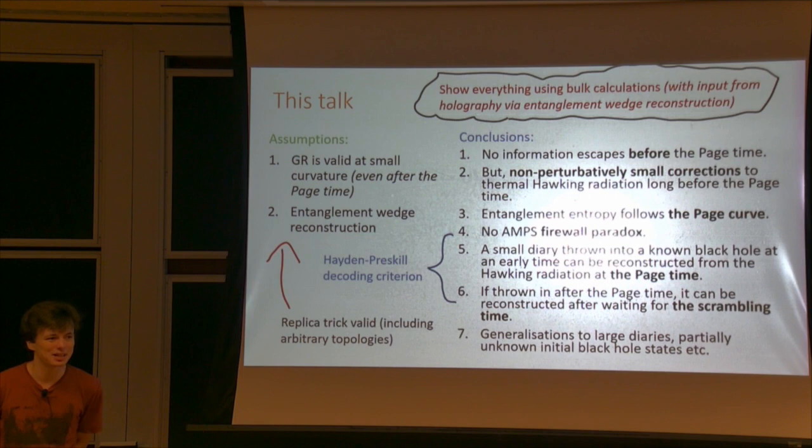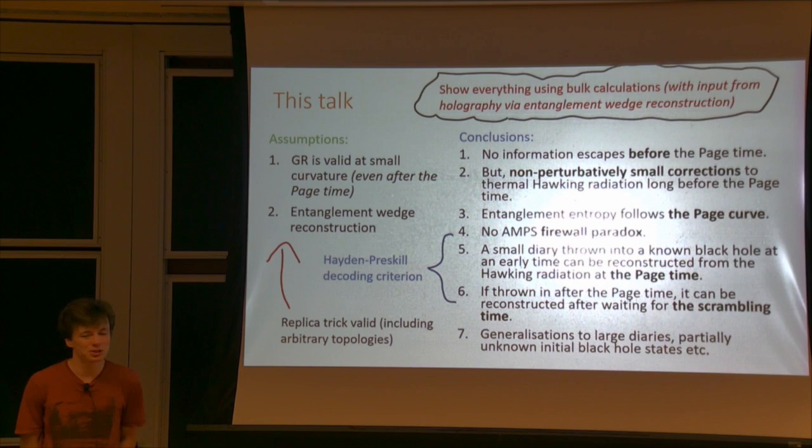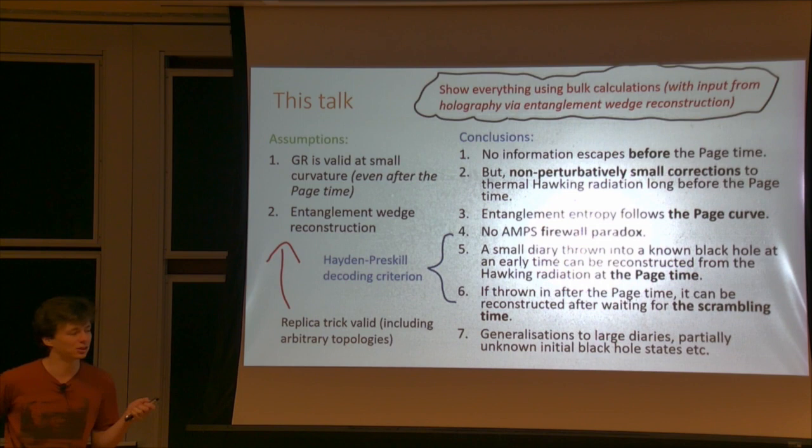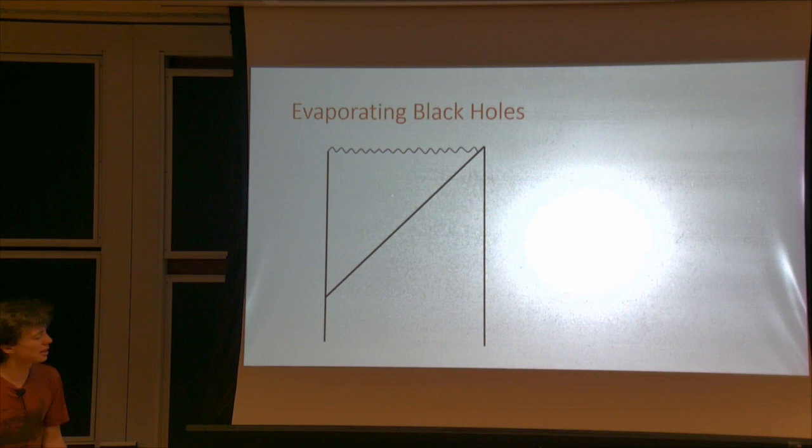I'm going to show all these things using bulk calculations. Although semi-classical GR does not have information coming out, there will be some input from more than semi-classical stuff — that's going to come from entanglement wedge reconstruction, which is really coming from the replica trick and saying that when you have multiple replicas, you can have connected geometries between them.